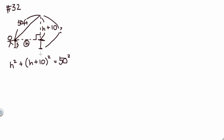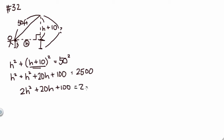Let's distribute, because this part is (H plus 10) times (H plus 10). So I get H squared plus 20H plus 100 is equal to—50 times 50 is 2500. Then combining like terms, I get 2H squared plus 20H plus 100 is equal to 2500.